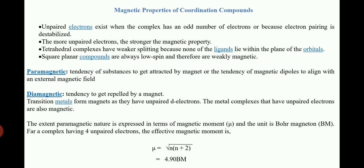Let us discuss the concept of magnetic properties of coordination compounds. As we know, the formation of metal complexes is due to a donation of lone pair of electrons by the ligand towards the central metal atom to form a coordinate bond. If the complex or coordination compound has unpaired electrons, then it should be considered paramagnetic in nature and possesses a stronger magnetic property. Similarly, if the compound doesn't contain any unpaired electron, it is diamagnetic in nature and does not possess any magnetic property.